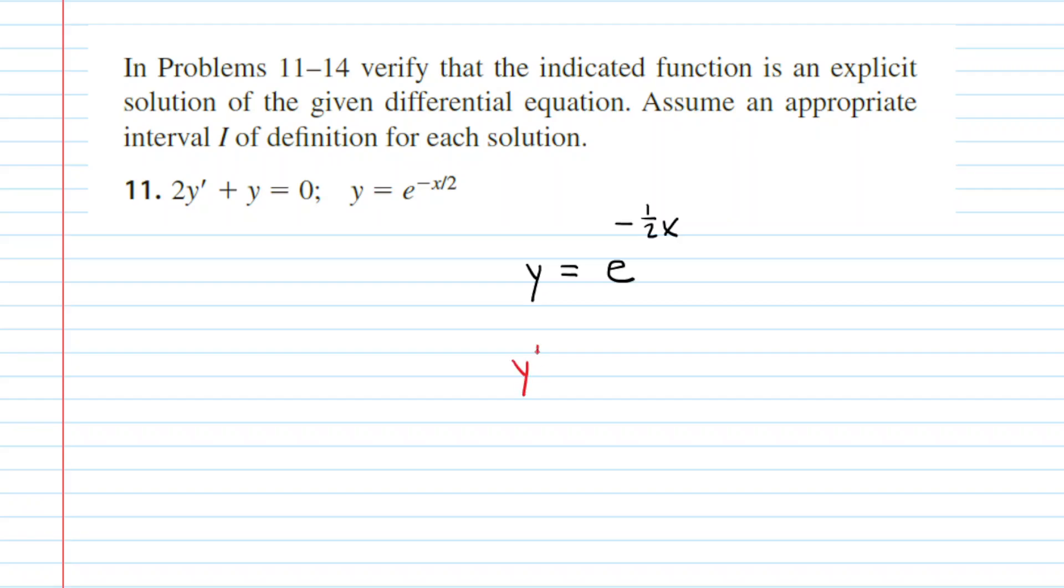The derivative of an exponential function is performed as follows. You recopy the function, so you'll have e^(-1/2 x). Then multiply by the natural log of the base, which is ln(e). The chain rule tells us to multiply by the derivative of the exponent. The derivative of -1/2 x is -1/2.